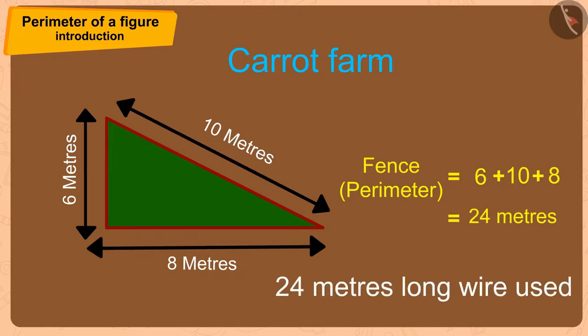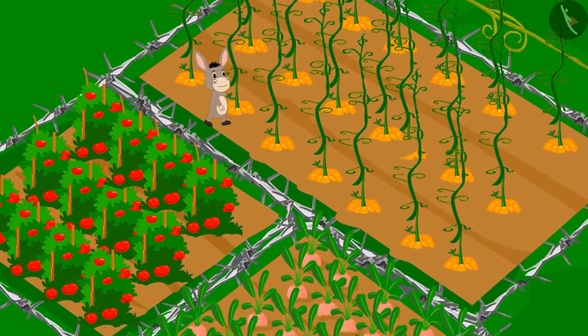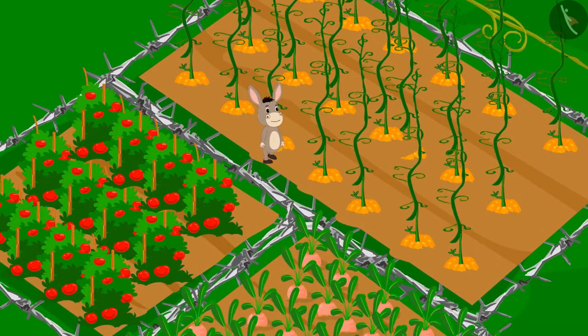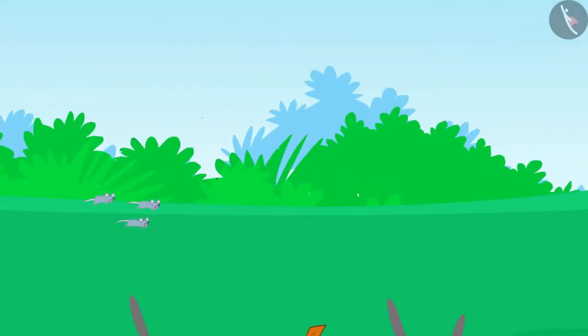Bhola finally put up a barbed wire fence around his farm and those mice never bothered Bhola again.